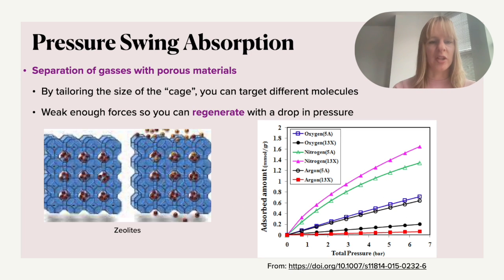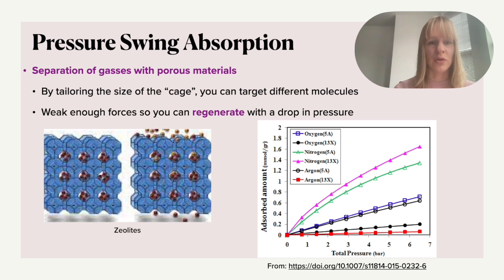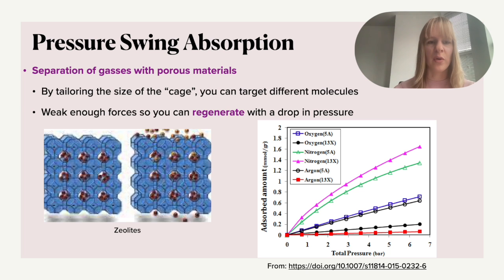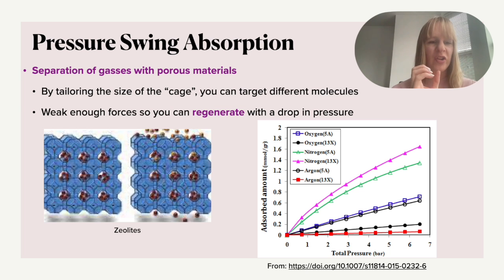In a lot of bioprocesses, we're not dealing with things in liquid but we're interested in gases — for instance, biomethane production. The approach for separation of gases using porous materials is not that dissimilar from chromatography. Gases are much smaller, so we need very porous materials with very specific cages. In terms of size, you need to think in angstroms — 1×10⁻¹⁰ meters — which have specific sizes that can incorporate different gaseous molecules.